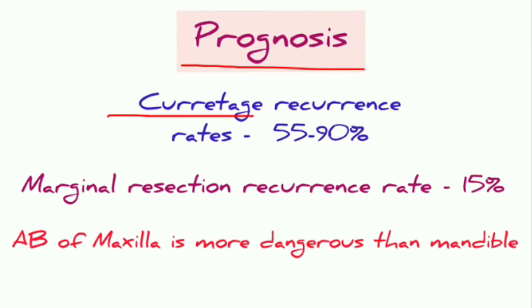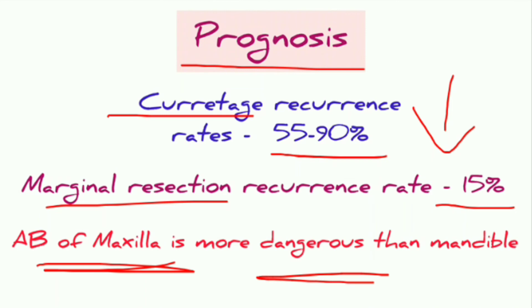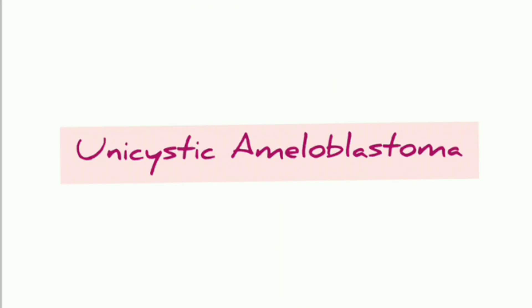Regarding prognosis, curettage has a recurrence rate of 55 to 90%, so it is not recommended for ameloblastoma. Marginal resection has a 15% recurrence rate, which is much lower. Ameloblastoma of the maxilla is usually more dangerous compared to the mandible.